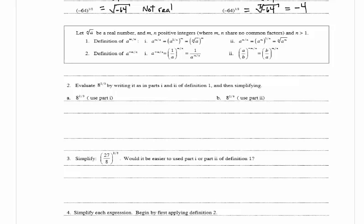In problem 2, it wants us to evaluate 8 to the 2 thirds using parts 1 and 2 of the definition. For part a, using part 1, we write 8 to the 2 thirds as 8 to the 1 third all squared, which equals the cube root of 8 all squared, which equals 2 squared, which equals 4.